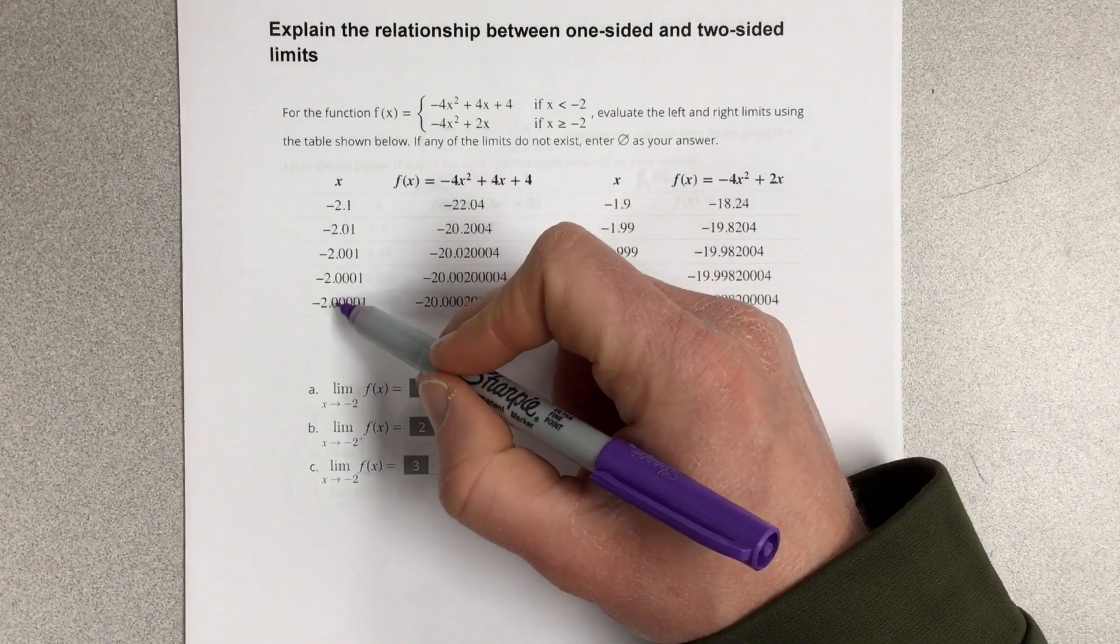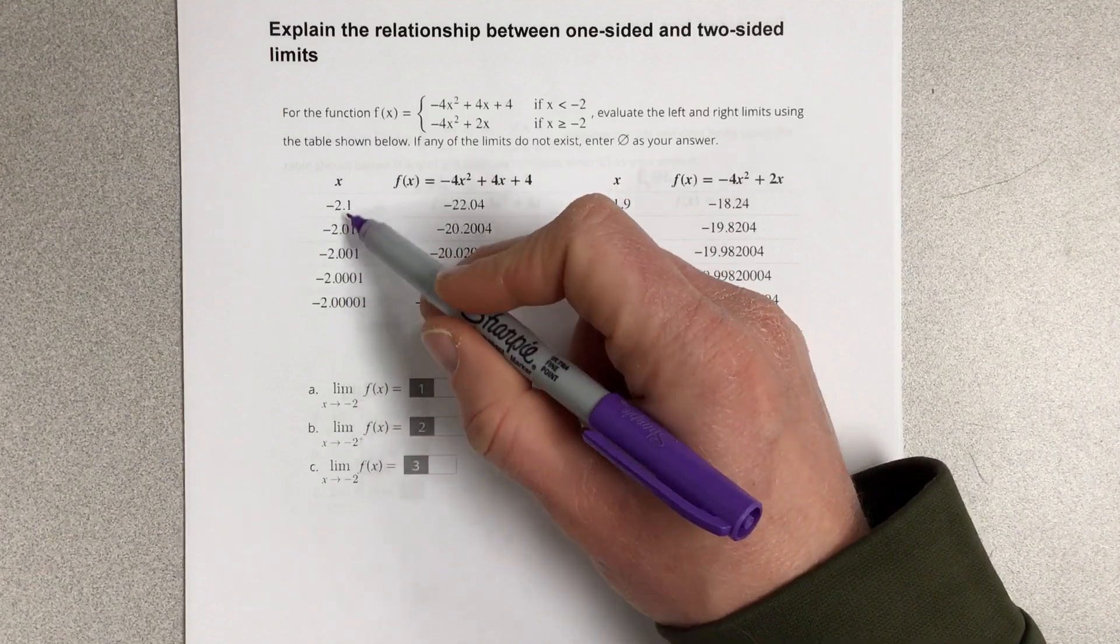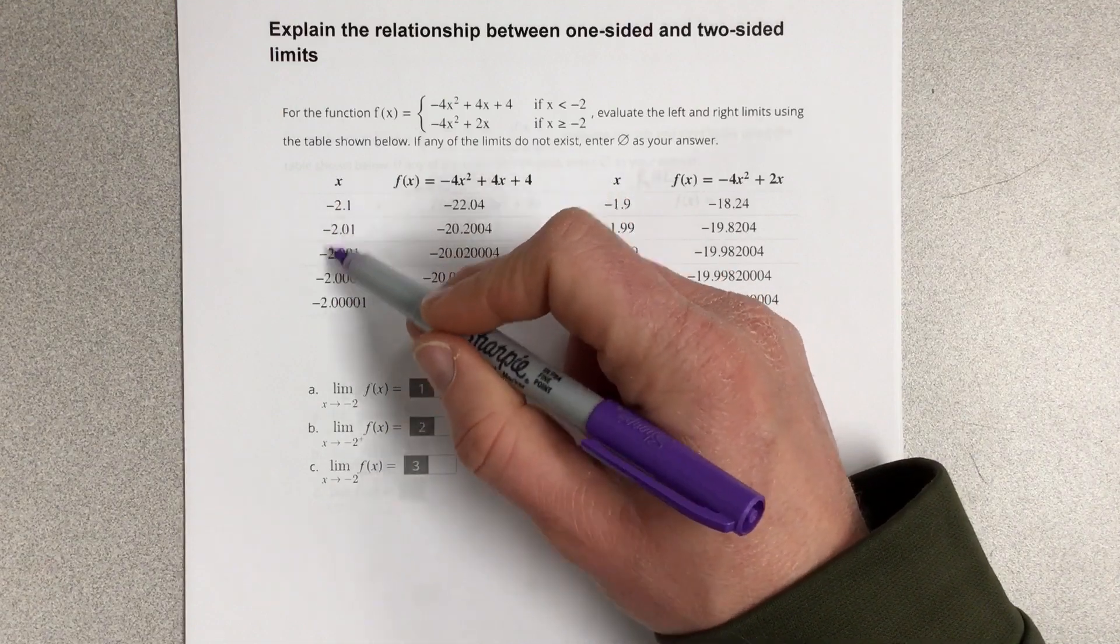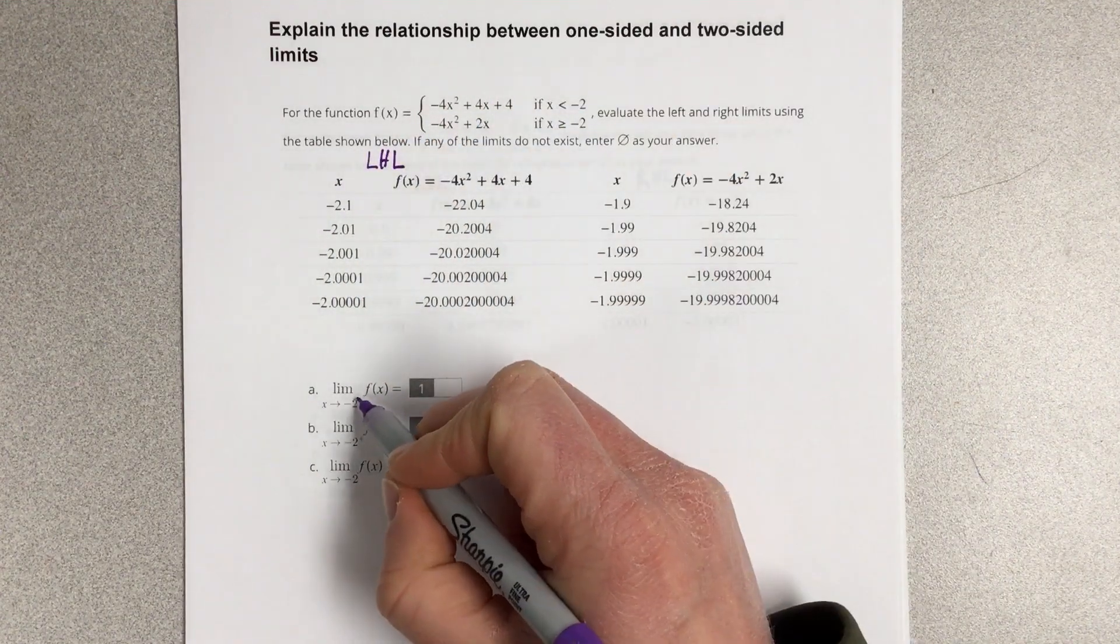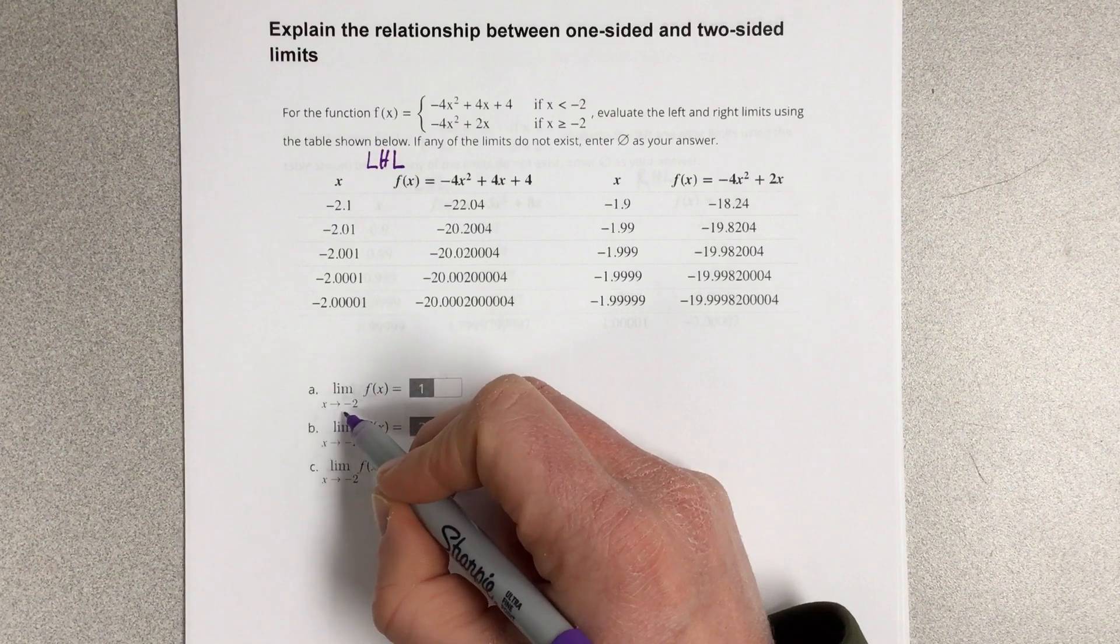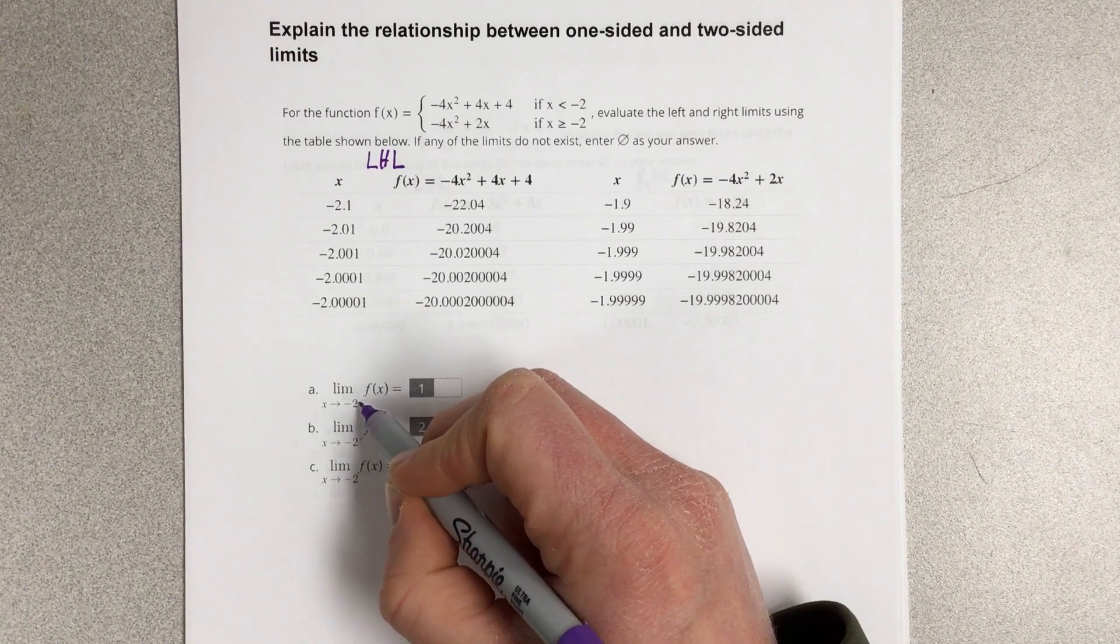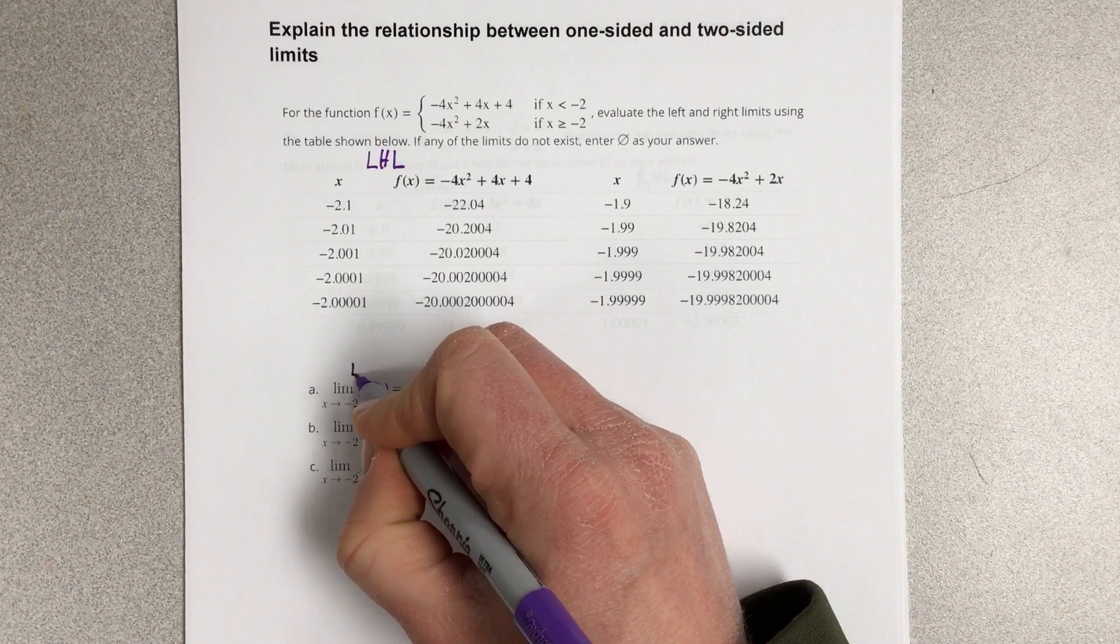So, we're approaching this x value of negative 2 from the left side. We're starting with the smaller numbers and approaching it from the left side. This is the left-hand limit. And that's what this is telling you here when it says x approaches negative 2 from the... They have a negative sign that means from the left. So, this is the left-hand limit.